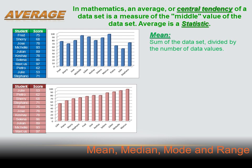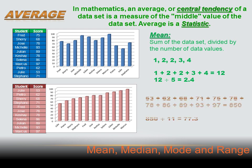The first precise measure is mean, and mean is what you've probably meant by average. It's just the sum of all the numbers in the data set divided by the number of numbers in the data set. For example, if I had a data set of 1, 2, 2, 3, and 4, I'd add all those up to get 12, then divide 12 by 5 — because there are 5 entries — and get 2.4. For our class data set, all those numbers add up to 850, and there are 11 students, so 850 divided by 11 gives a mean of 77.3.